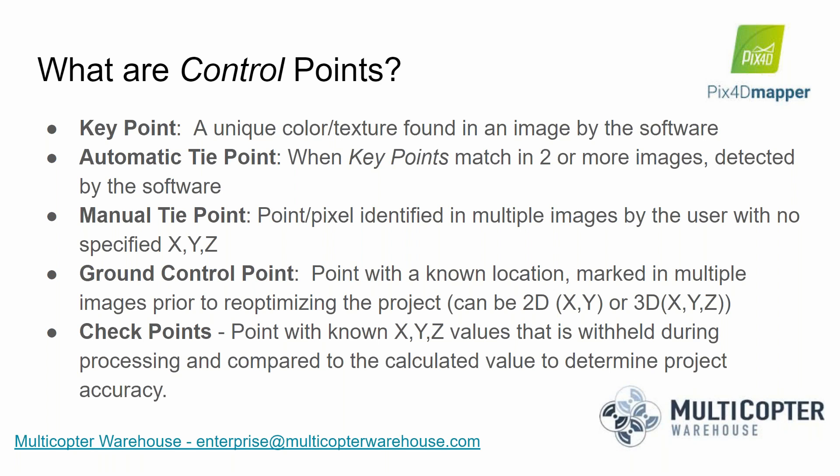Another point type you may be familiar with in PIX4D is the manual tie point. A manual tie point is a pixel that you identify in multiple images as the user, but you don't necessarily have an XYZ coordinate for it — you're just telling the software that this is the exact same pixel across those images.